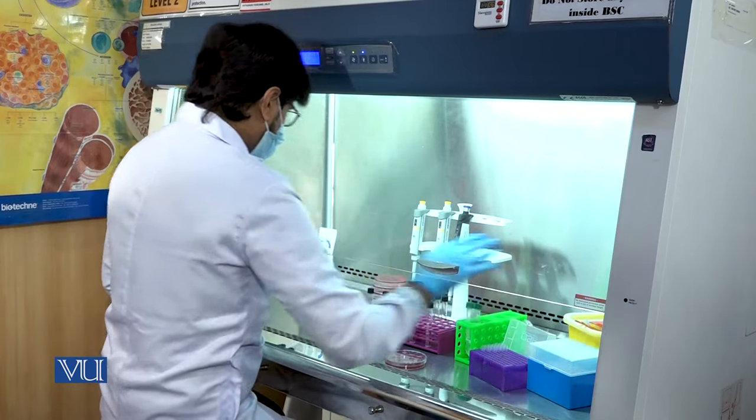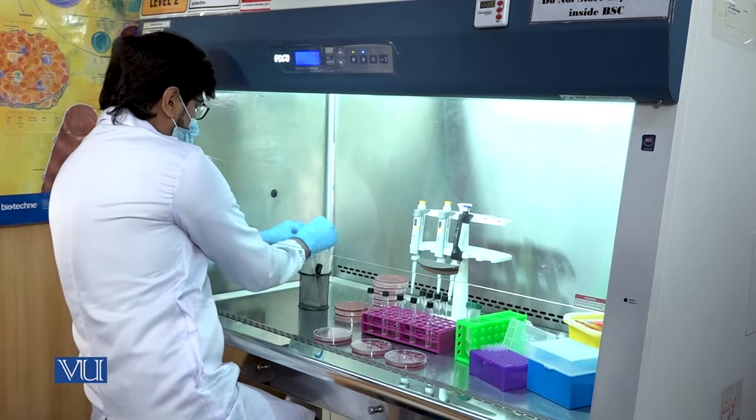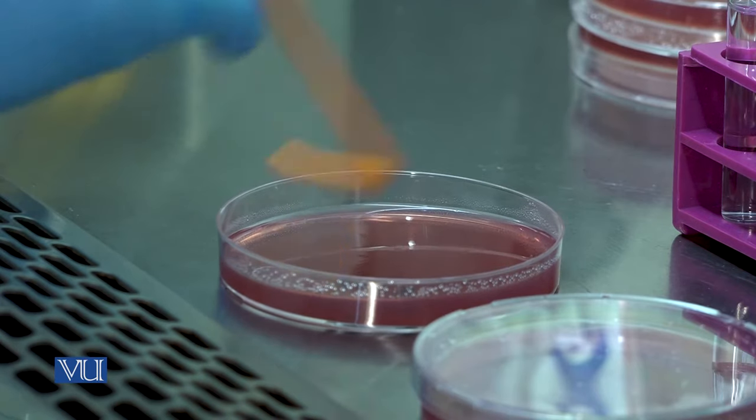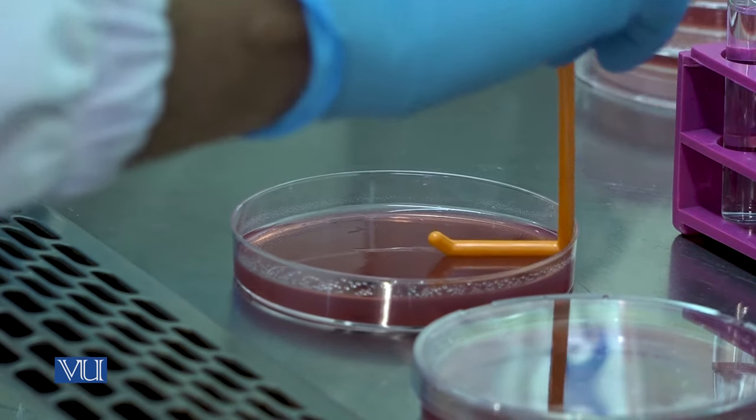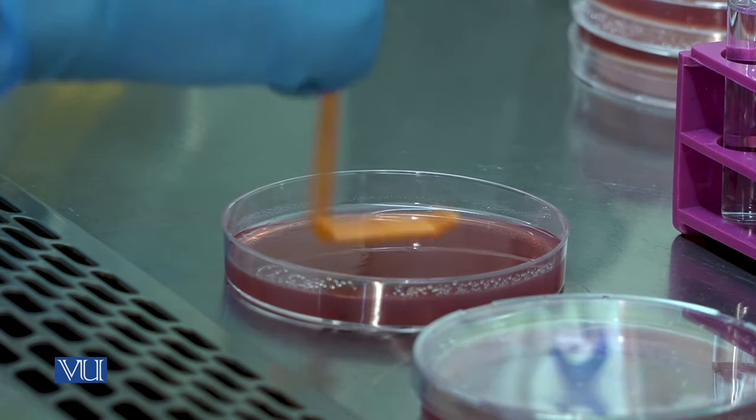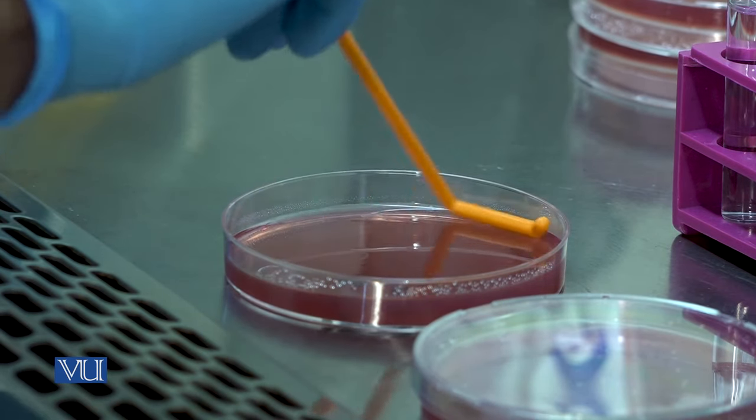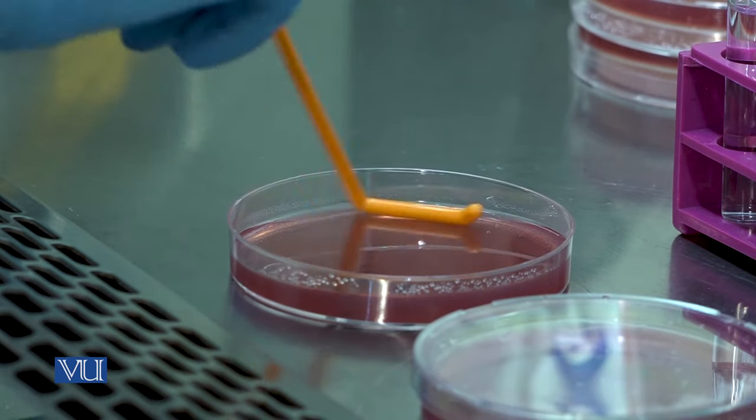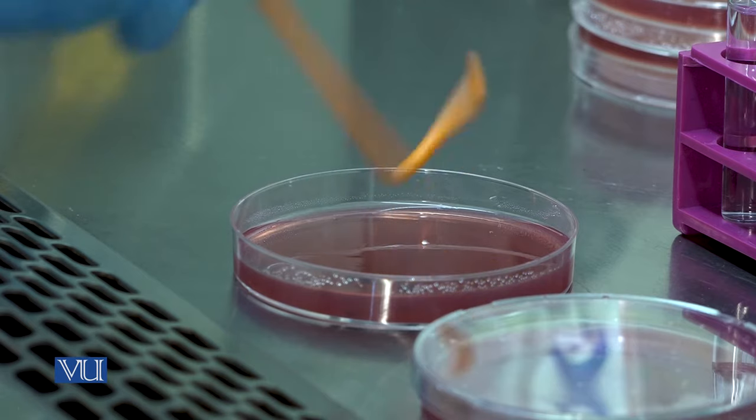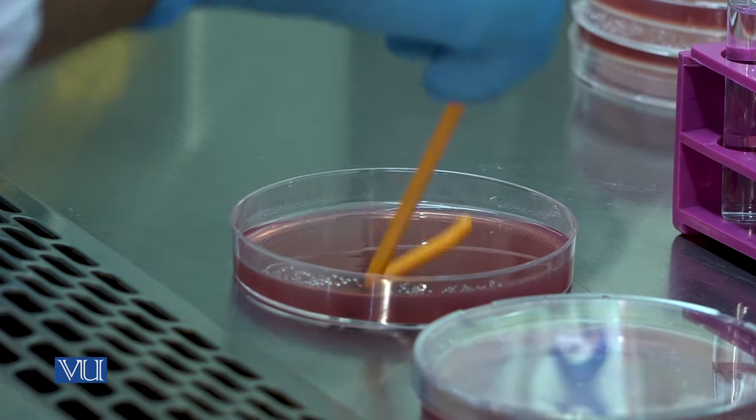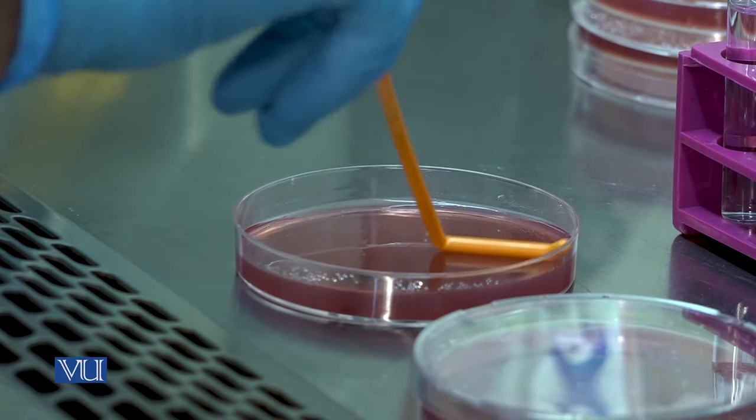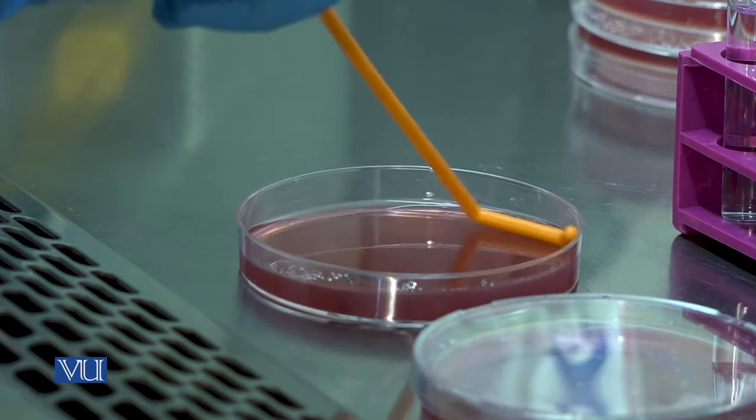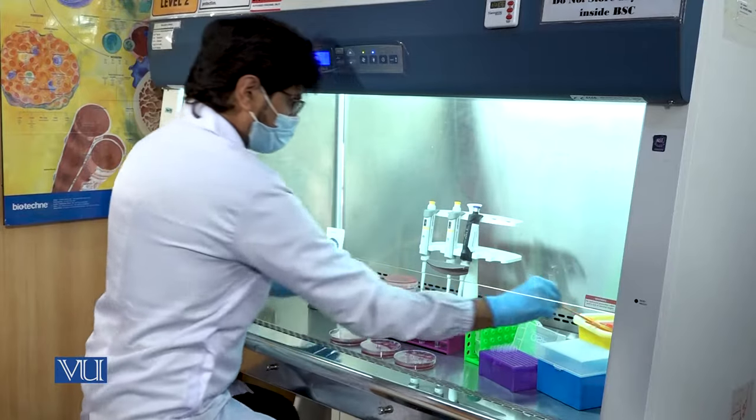Discard the spreader. Again, take out a new bacterial spreader and spread the third dilution in the third culture media petri plate until the solution is uniformly spread throughout the plate. Discard the bacterial spreader.